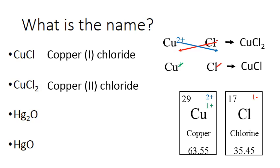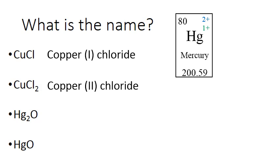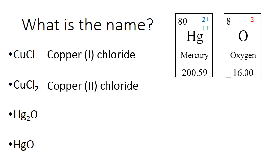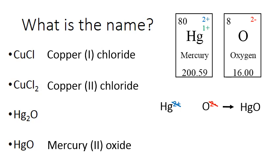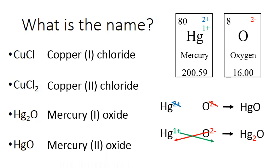Next we're looking at Hg (mercury) and O (oxygen). Hg is the multivalent element here; it can form a charge of 2+ or 1+. Oxygen forms a charge of 2-. When mercury is 2+ and oxygen is 2-, they're the same, so we cross those out and get HgO — that's mercury(2) oxide. When mercury is 1+ and oxygen is 2-, we cross those down and get Hg2O — that is mercury(1) oxide.